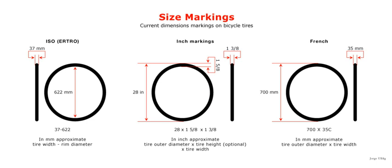Beaded-edge tires are mounted on hooked bead rims. They are marked with an overall diameter code and a nominal section width code, separated by a cross. An example of such a marking is 20 × 1.375.